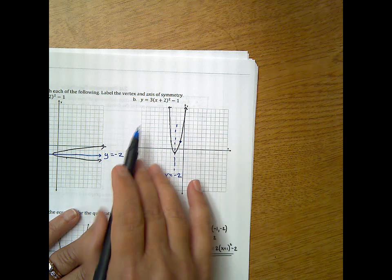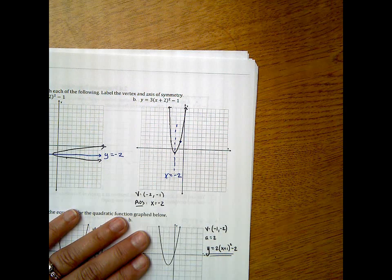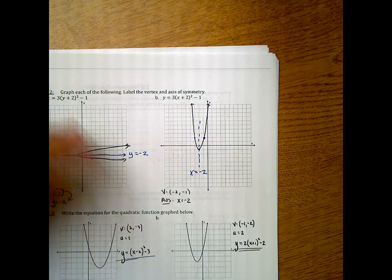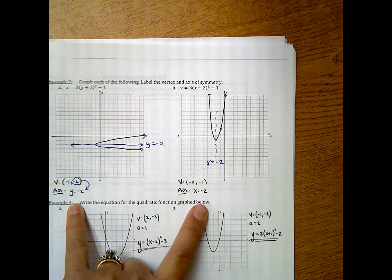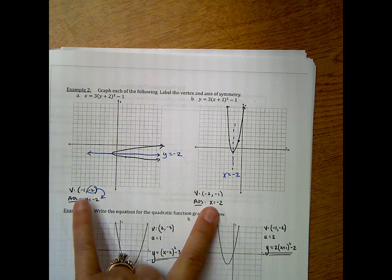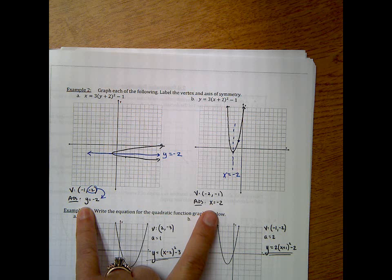So if you look, these two are almost the same parabolas, but they're opposite, and their x's and y's are switched, which makes one sideways and one going up and down. Their vertices are flipped, and their axis of symmetries, this one's a horizontal line, and this one's a vertical line.